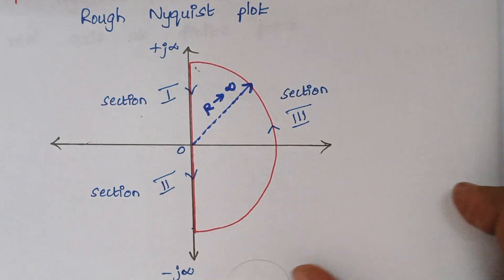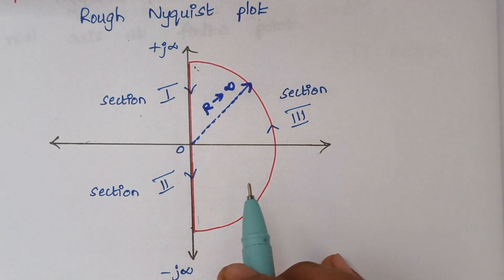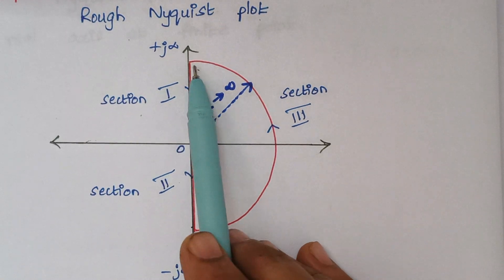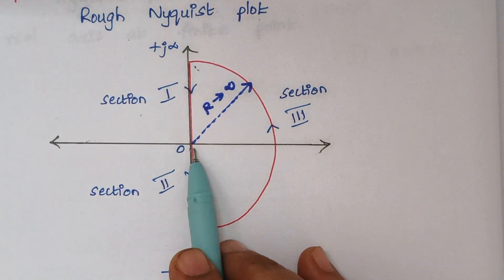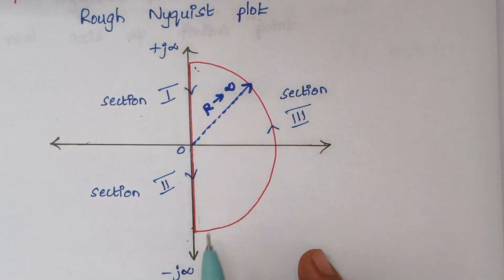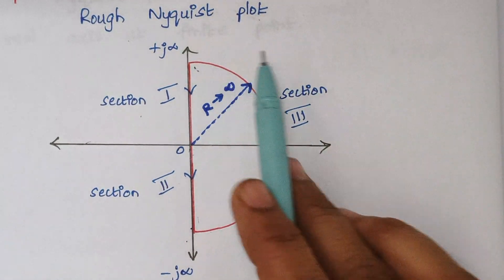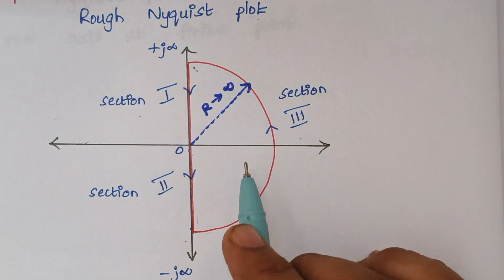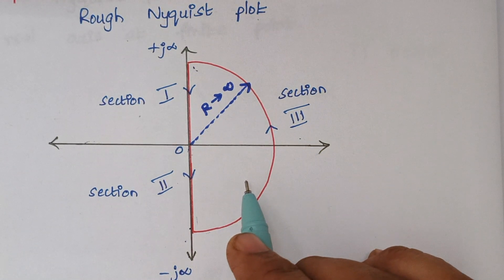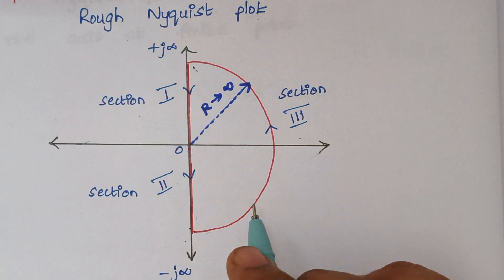After drawing this plot, we divide it into different sections. Section 1 starts at plus infinity and ends at 0. Section 2 starts at 0 and ends at minus infinity. Section 3 covers the remainder. The radius of the semicircle has to be considered as infinity — this is the basic rule. And we have drawn the rough Nyquist plot.